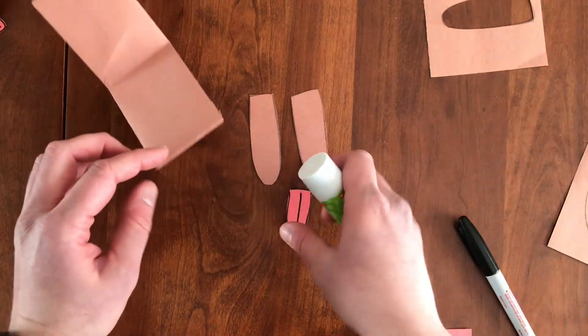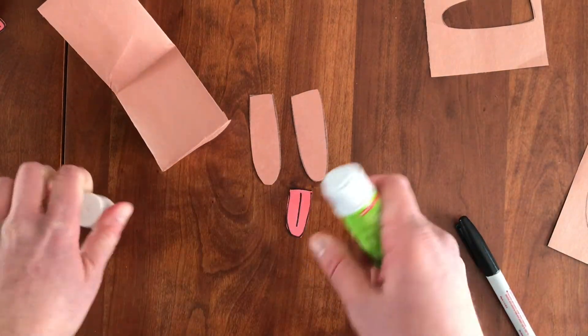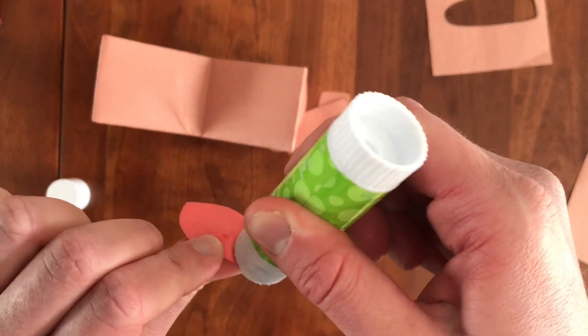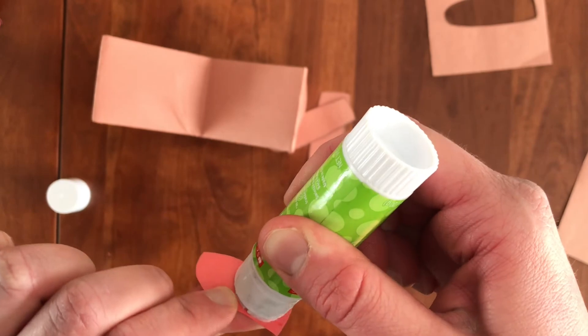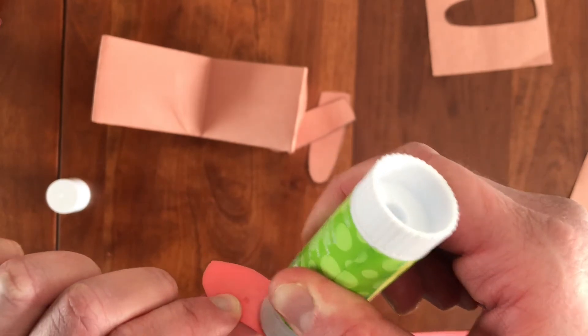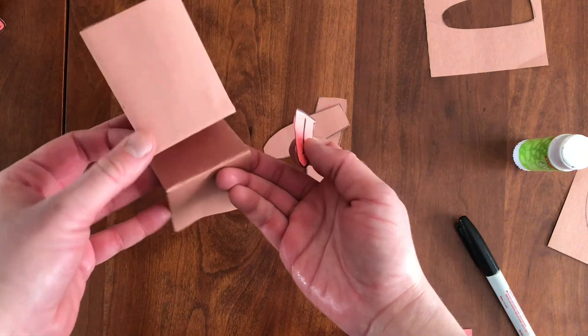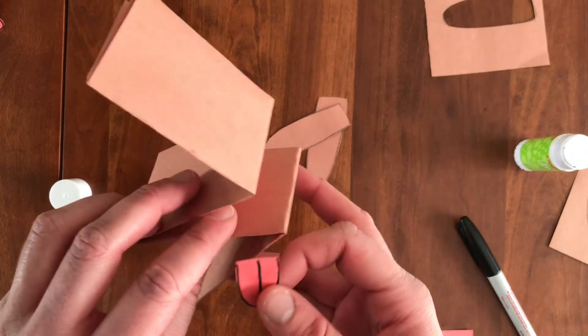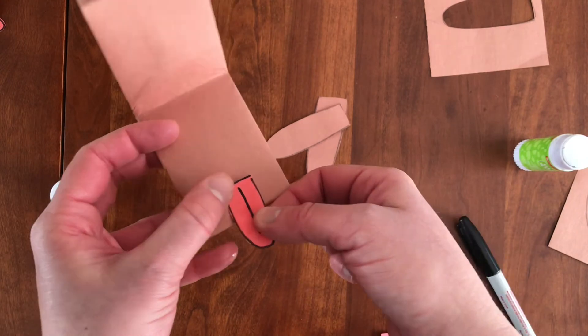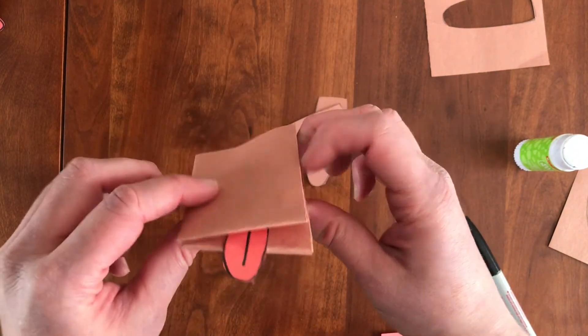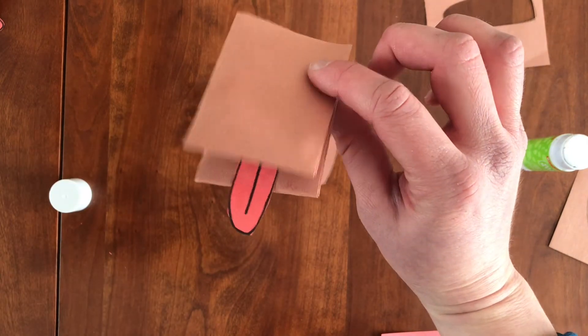So I'm going to take my glue stick and I'm going to just put a little dab right here on the end. I don't want to cover the whole thing because I want a little bit of his tongue to stick out. And then I'm going to take my puppet, open it up and stick the tongue in right there. Now when I close it, you can see how the tongue sticks out. Really cute.